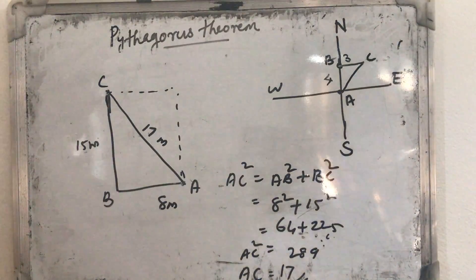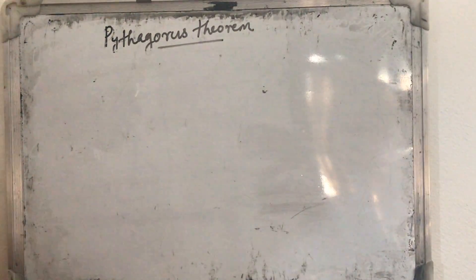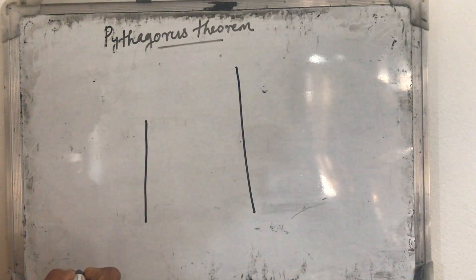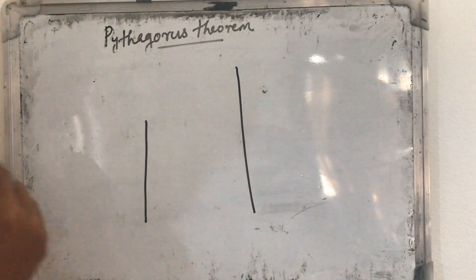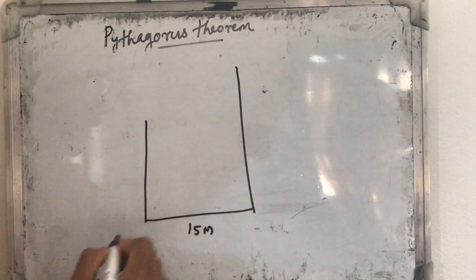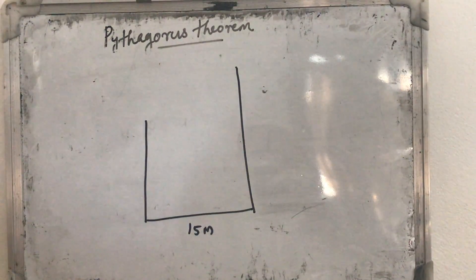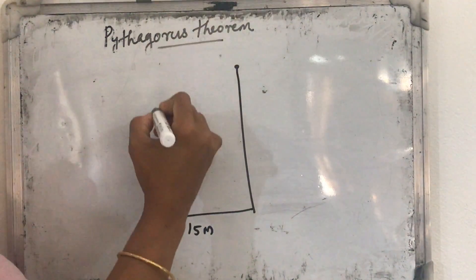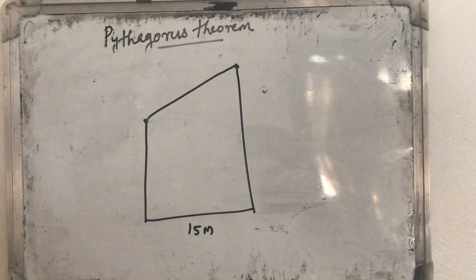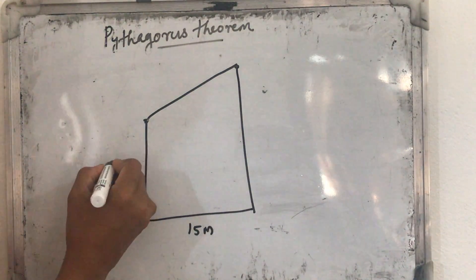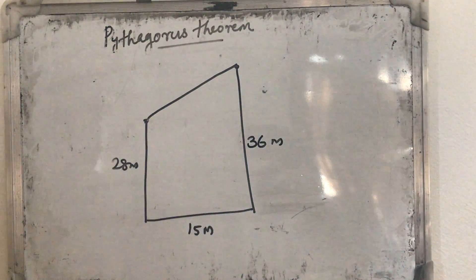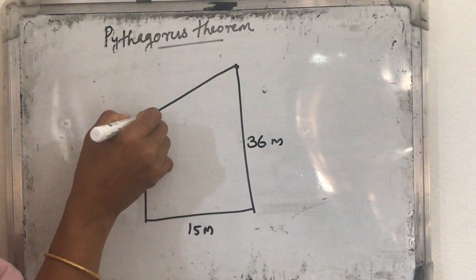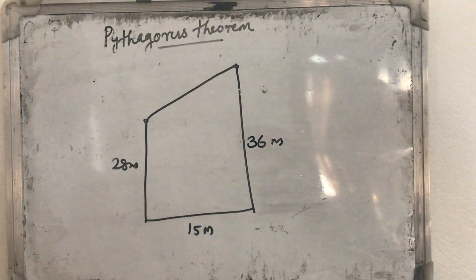Next question: two towers of height 28 meters and 36 meters are built at a distance of 15 meters apart. We want to find the distance between the tops of the towers. The first tower is 28 meters high, the second is 36 meters high, and the distance between the bases is 15 meters.